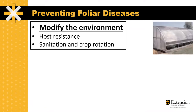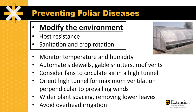Another thing we might want to consider is modifying the environment. Fungi are common disease-causing organisms of foliar diseases in tomatoes. Fungi require a certain amount of humidity, moisture, temperature, and time to reproduce and cause infection. So it's important to monitor the temperature and humidity in our high tunnels to know what the environmental conditions are.